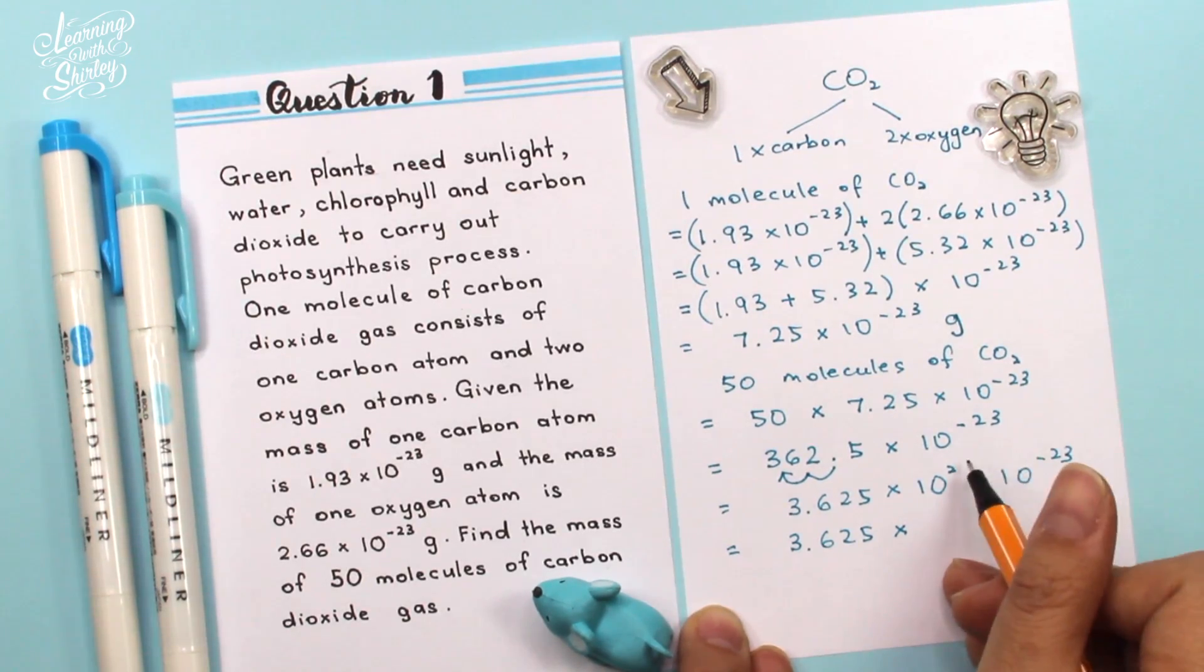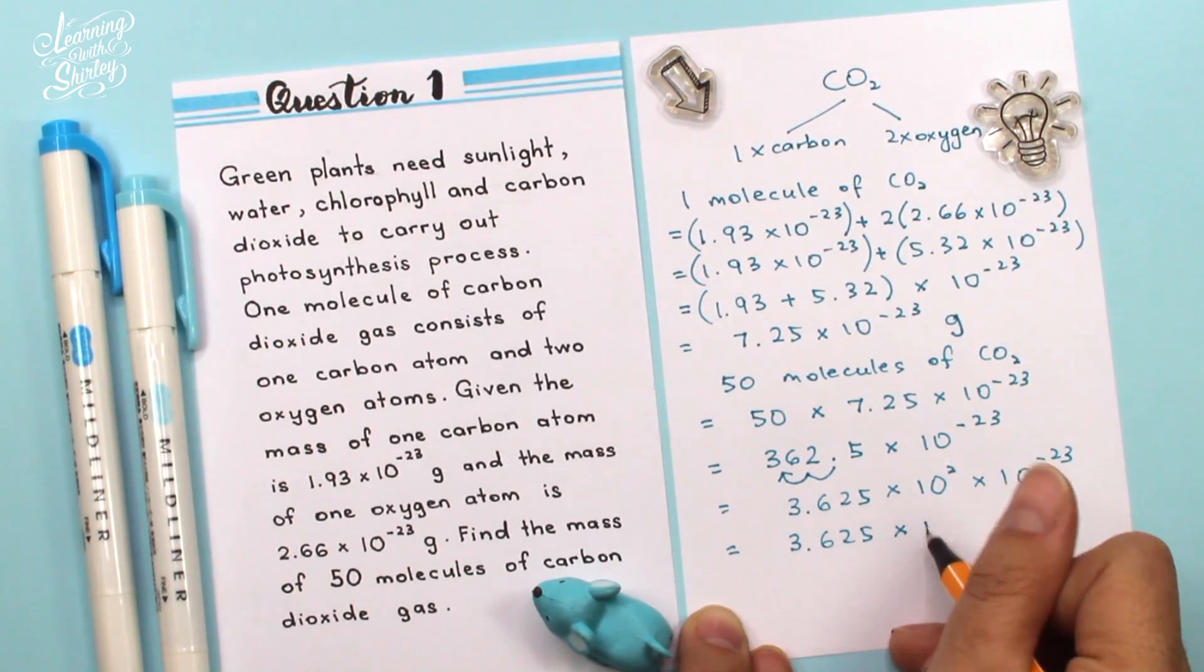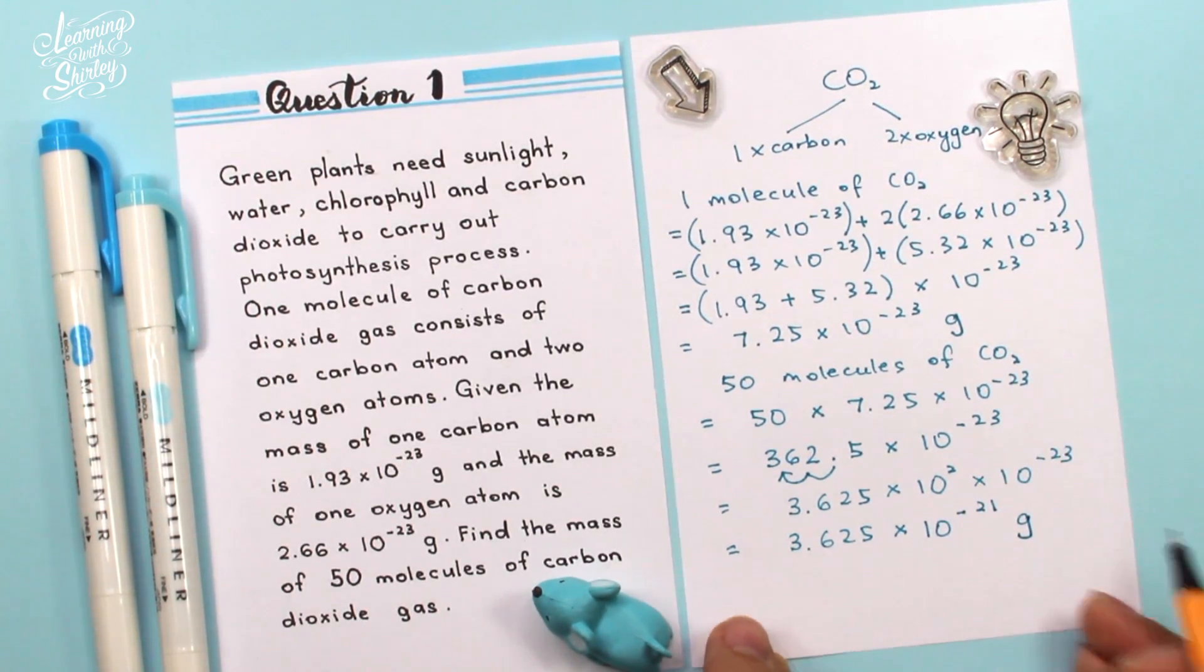So 3.625 times 10 to the power of 2 times 10 to the power of negative 23. Because of times, we need to plus the power. So become 10 to the power of negative 21. And the unit is in grams.